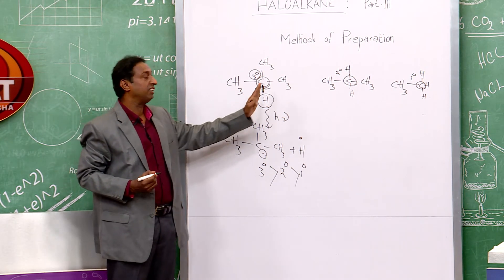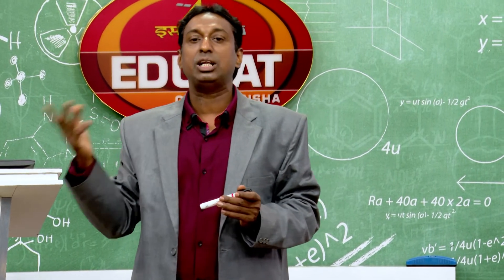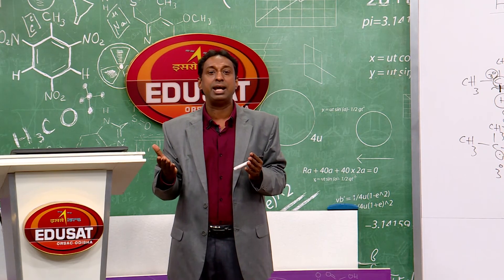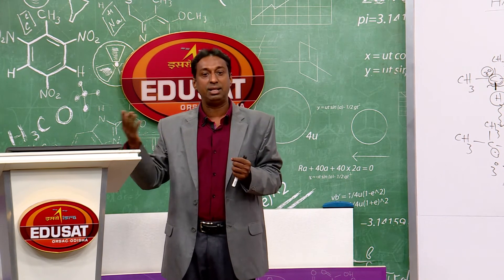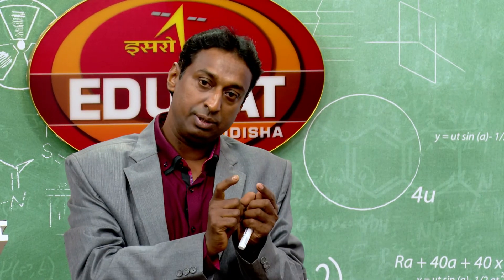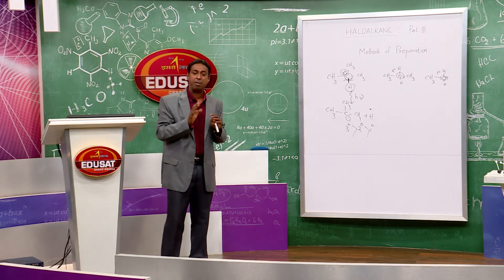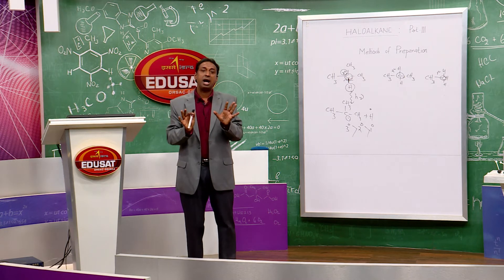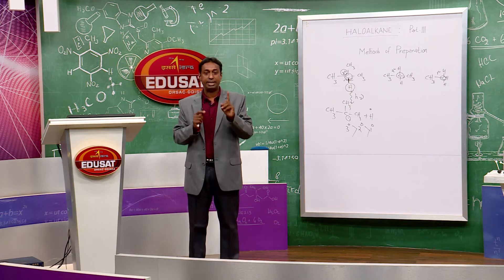The reactivity order for abstraction of hydrogen is: 3° hydrogen, then 2° hydrogen, then 1° hydrogen, and vinyl/aryl last. Also, benzyl and allyl positions, if present, are even more reactive — easier to abstract hydrogen than from 3°, 2°, or 1° carbons.